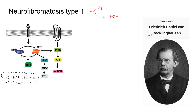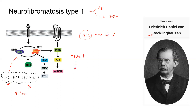Von Recklinghausen disease means neurofibromatosis type 1. It is caused by mutation in the NF1 gene, which is present on chromosome 17. NF1 codes for a protein known as neurofibromin, which is a tumor suppressor protein. Its function is to inhibit RAS activity through GTPase activity. If there is an NF1 mutation, neurofibromin is absent, leading to excessive RAS pathway activation, increased cell proliferation, and tumor formation.